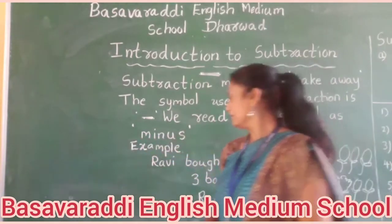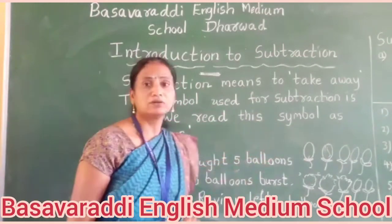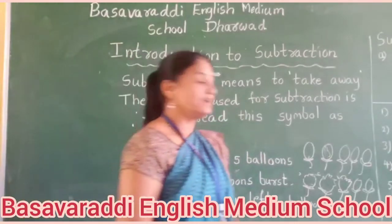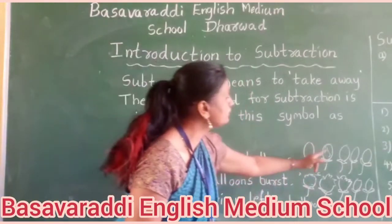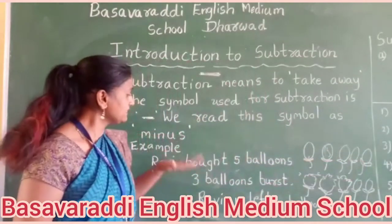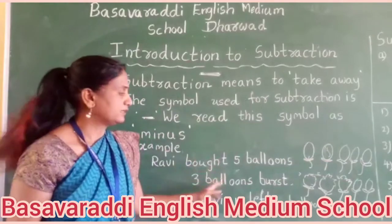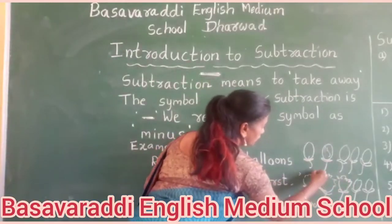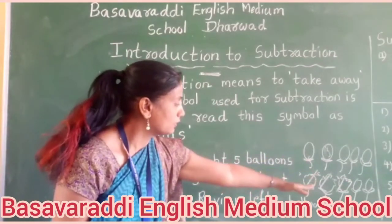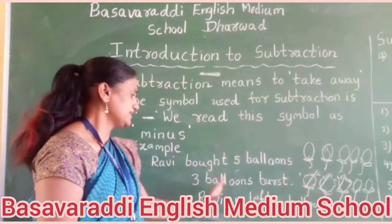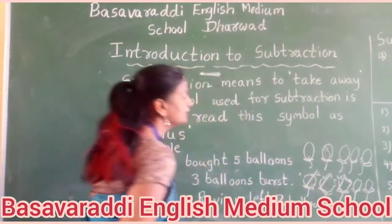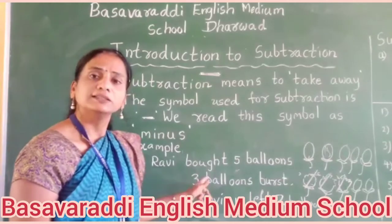For example, Ravi brought five balloons. In that five balloons, three balloons burst. One, two, three, four, five — five balloons. Three balloons burst: one, two, three. Remaining — two balloons. Yes, he is left with two balloons. How many balloons? Two balloons. This is what? This is subtraction.